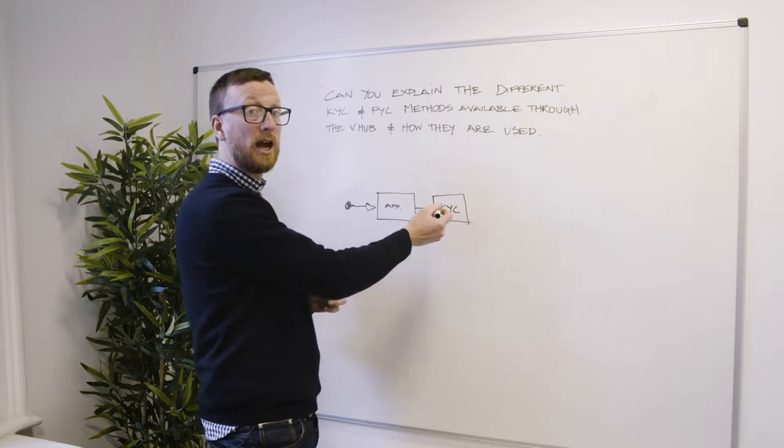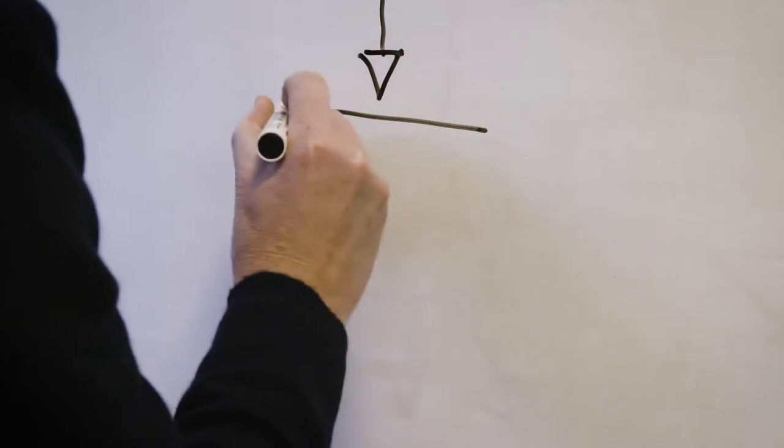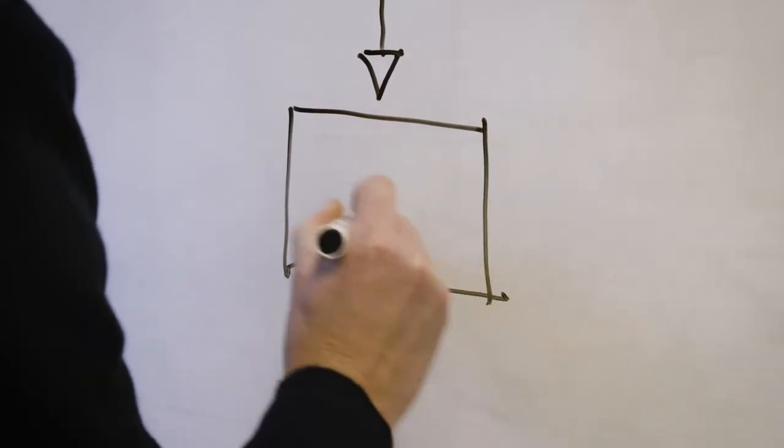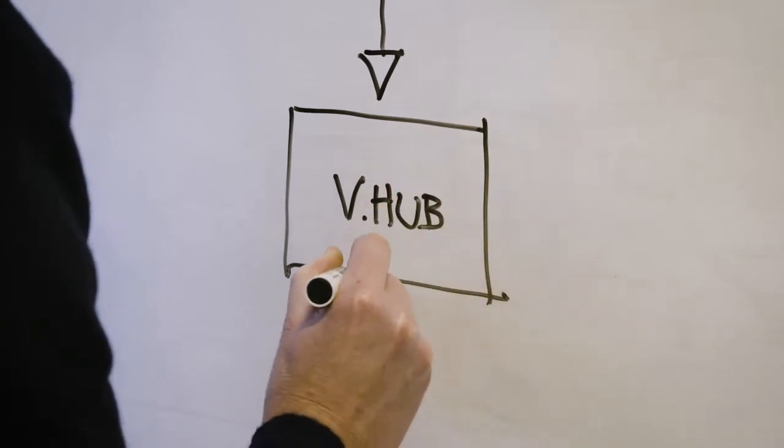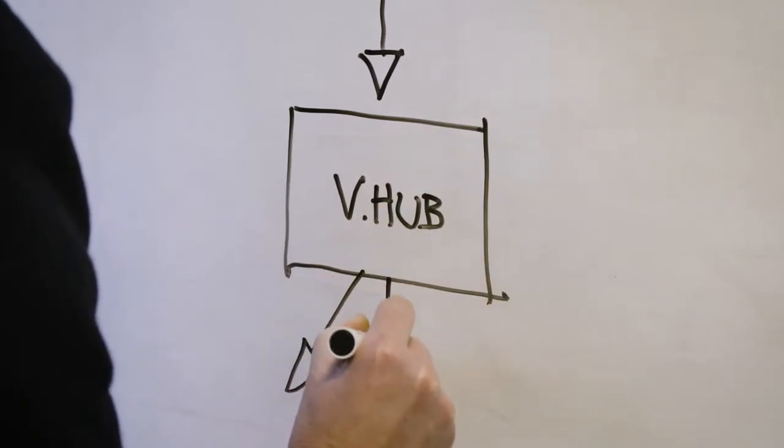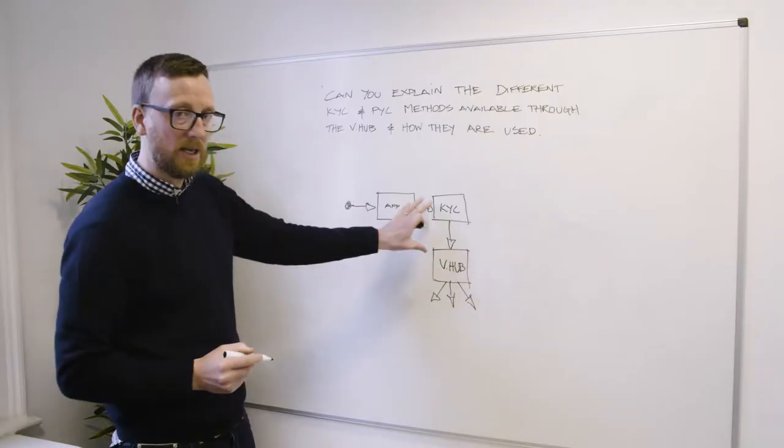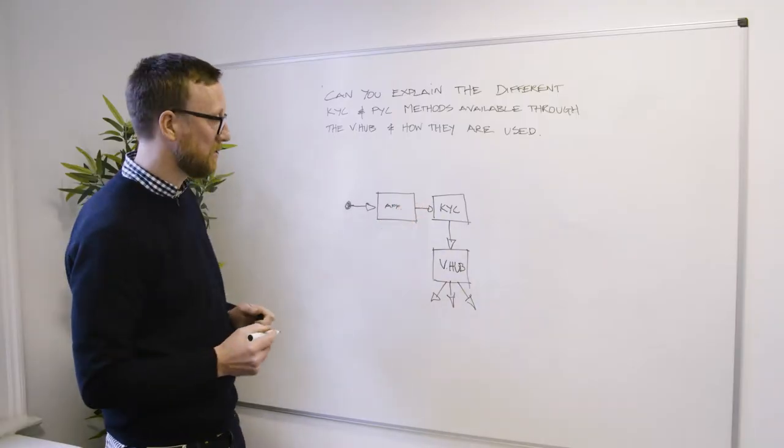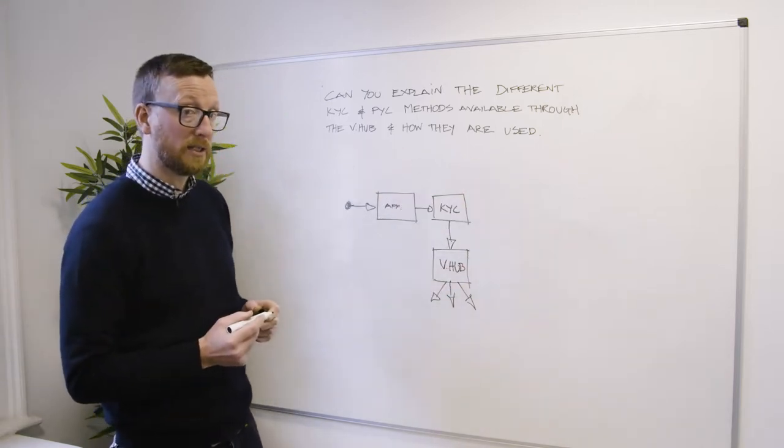Now we want to prove that Conor Hickey has a valid identity, and that is usually a call to the DealFlow verification hub, where one of a number of different external services can be used. So that's how KYC is used in the context of the overall e-contracting solution.